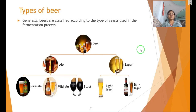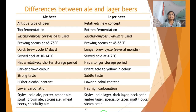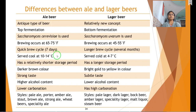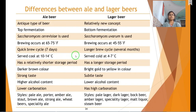Beers are classified according to the type of yeast used in fermentation: ales include pale ale, mild ale and stout; lagers include light lager and dark lager. Differences between ale and lager depend on yeast type, fermentation temperature, cycle time, colour, taste, alcohol content and storage type.